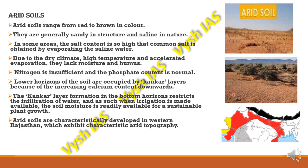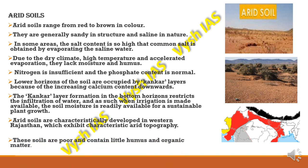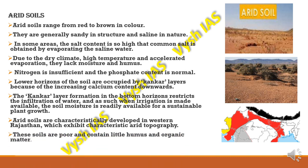Arid soils are mainly developed in Western Rajasthan, exhibiting characteristics of arid topography. These soils are poor in humus and organic matter.